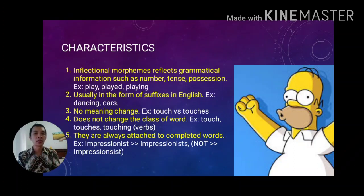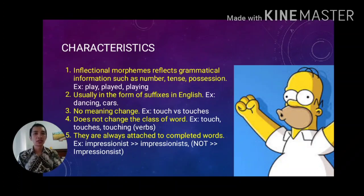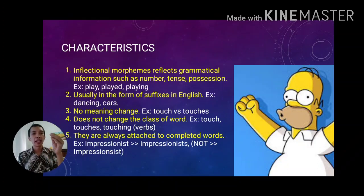The second characteristic is that inflections are usually in the form of suffixes in English — we add a bound morpheme at the end of the root, like '-ing,' '-s,' or '-ed.' Another characteristic is that there is no change of meaning: 'touch' and 'touches' are still in the same class of word. And inflection does not change the class of word — 'touch' and 'touches' remain verbs, still referring to the same action of using part of the body to contact something.